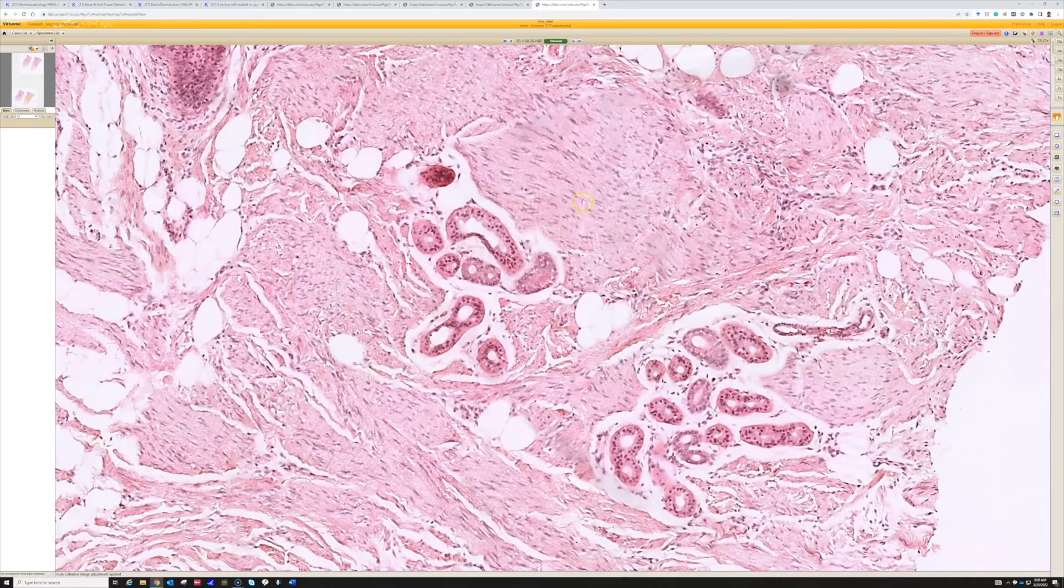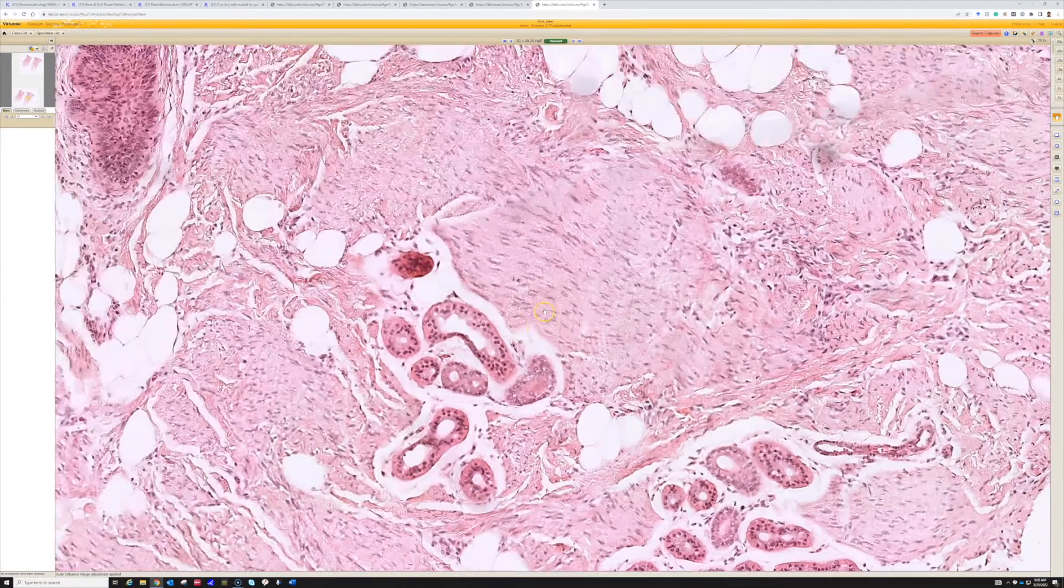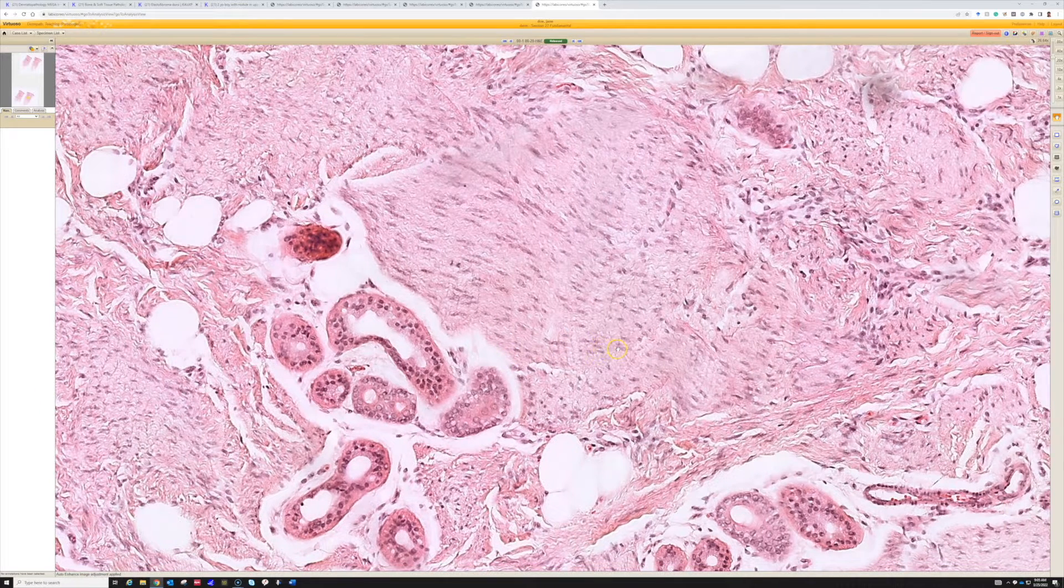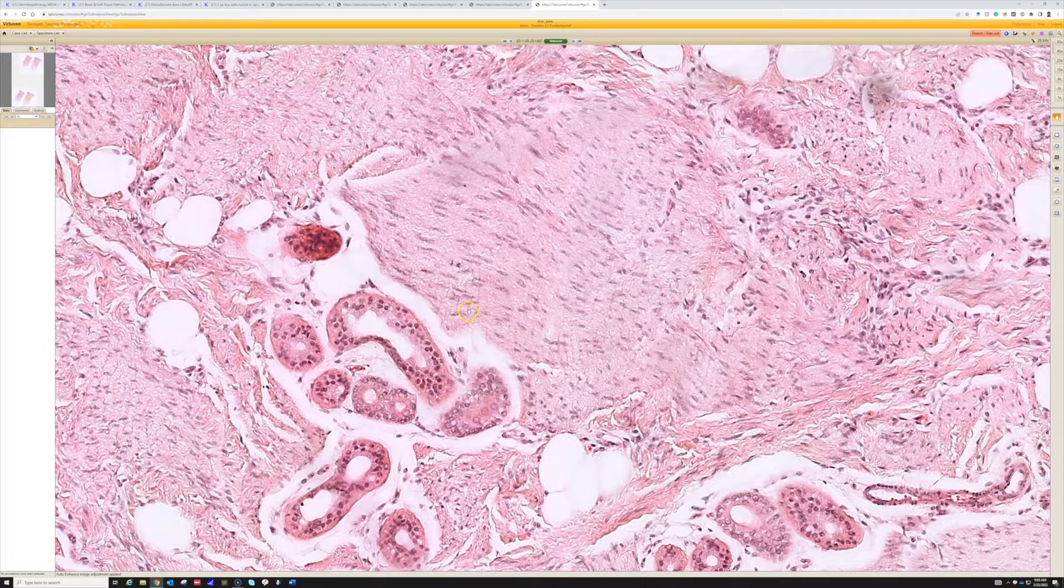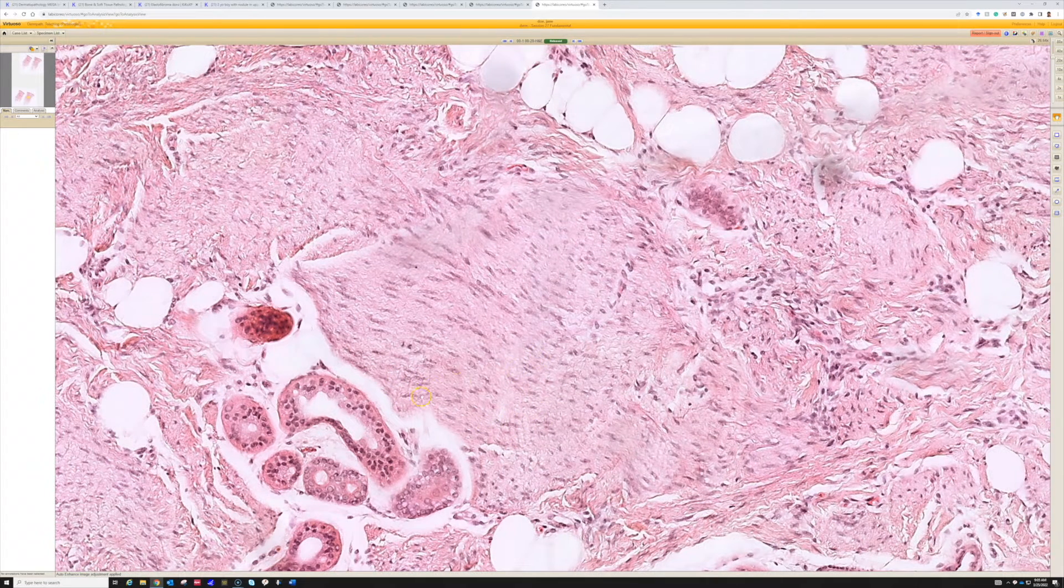So the parallel fascicles is the key. And if you've not watched it, I've got a video about the ramen noodle sign. Fibroblastic and myofibroblastic lesions, they tend to get this really wrinkly, rippled kind of waviness to them that sometimes people see and they think is nerve.